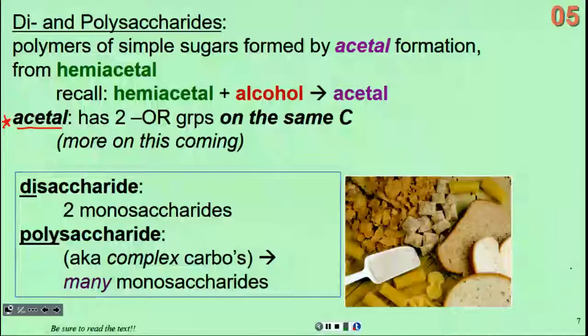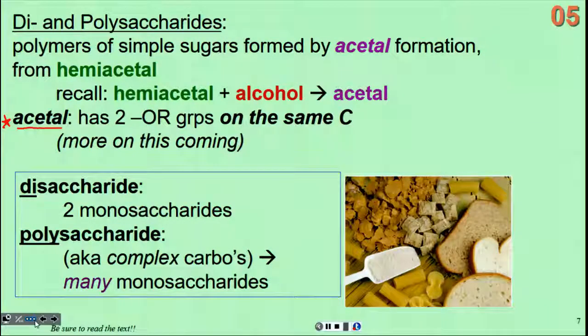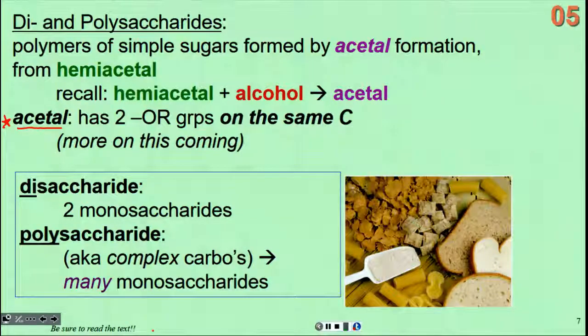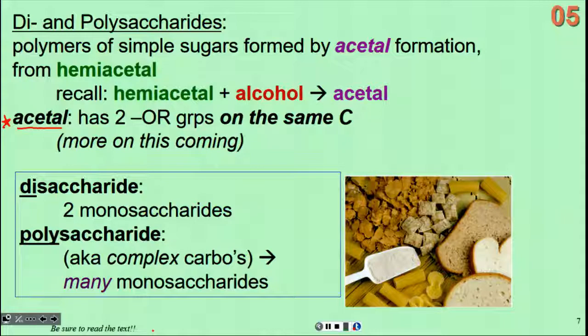The definition of an acetal, sometimes we forget, is a carbon that has two ether groups or OR groups on the same carbon. The disaccharide then is exactly what it sounds like - two monosaccharides. Polysaccharides - many. The polysaccharides in our diets are the things that we describe as complex carbohydrates, things that are good for us, variety of vitamins associated with them.